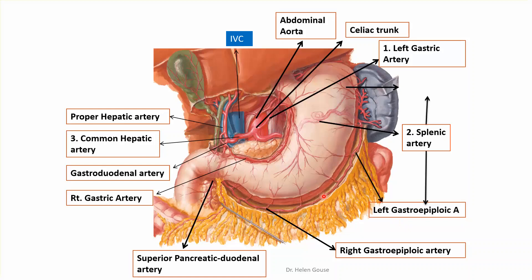So if the greater curvature of the stomach is marked and the blood supply is asked, you should write left and right gastroepiploic artery. The splenic artery also gives the short gastric, which supplies the fundus of the stomach, and pancreatic branches to the pancreas.